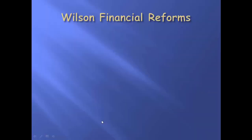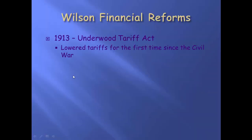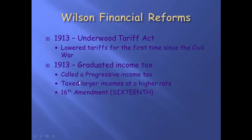What are Wilson's financial reforms? First of all, Wilson was a progressive and he decides to do the right thing. In 1913, he passes a law known as the Underwood Tariff Act — it lowers the tariffs, and that's what progressives wanted. He also oversaw the ratification of the 16th Amendment, which is a graduated income tax. If you make more money, you pay more taxes; if you make less money, you pay less taxes. It's referred to as a progressive income tax.